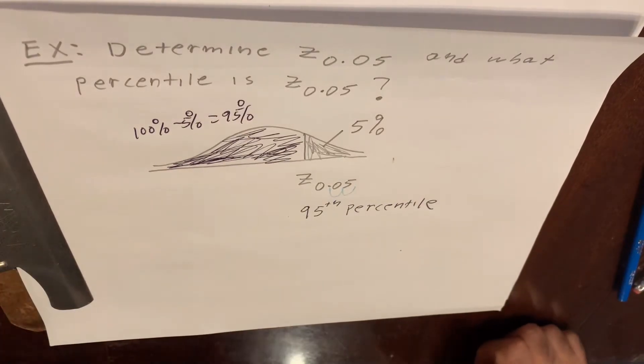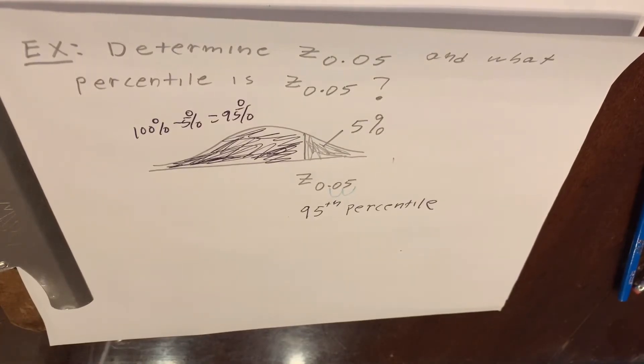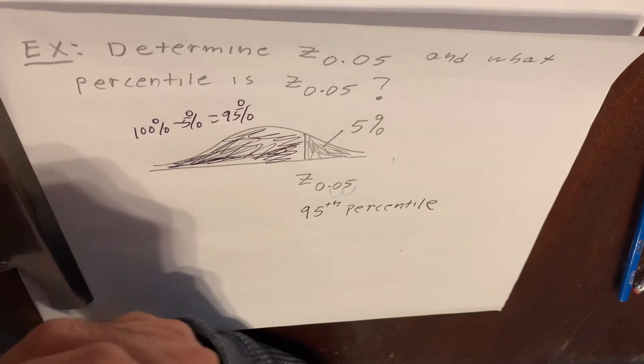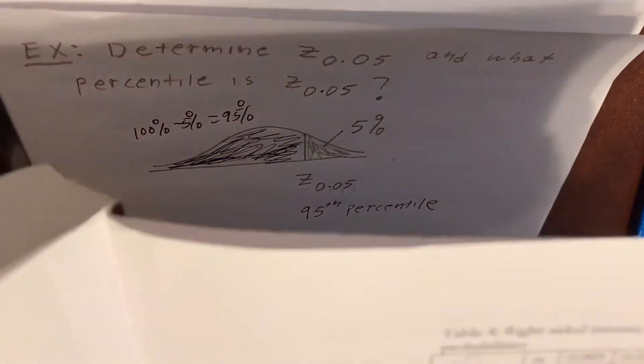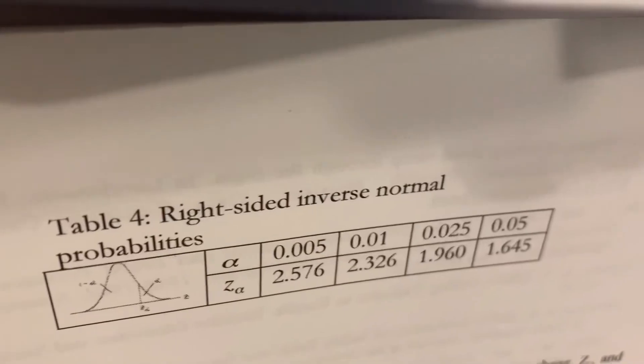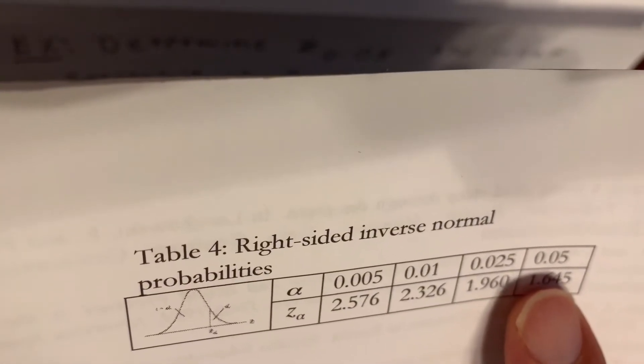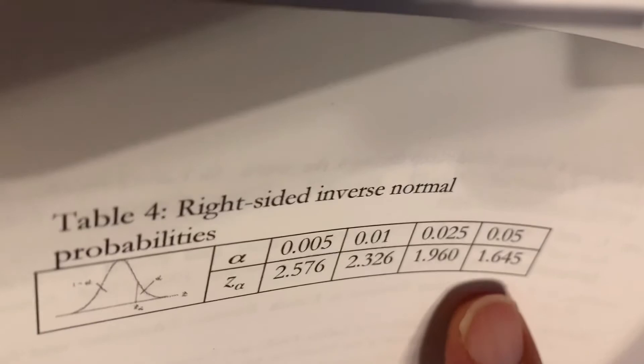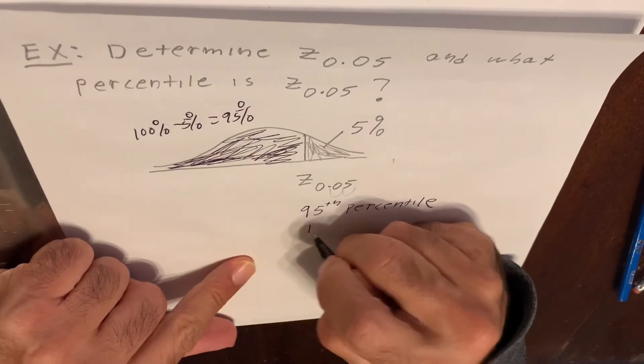Now, you're going to need to look this up. Everyone has different textbooks with different tables, and that's a little bit of a problem. But I'm going to show you in my book. I have a little table. This is a typical Z sub alpha table. And if you look, 0.05, that's the alpha. The Z score that corresponds to this is 1.645. Let me write that down. 1.645.